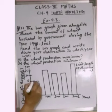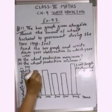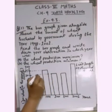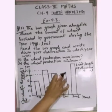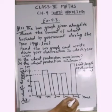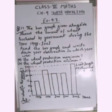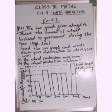In 1998, we join the bar and see the production is 15,000 tons. In 1999 it is 25,000 tons. In 2000 it is 20,000 tons. In 2001 it is also 20,000 tons. And in 2002, it goes up to 30,000 tons. So the wheat production is maximum in 2002.